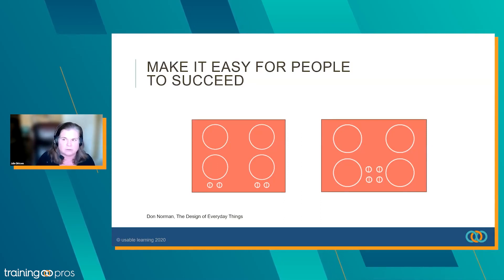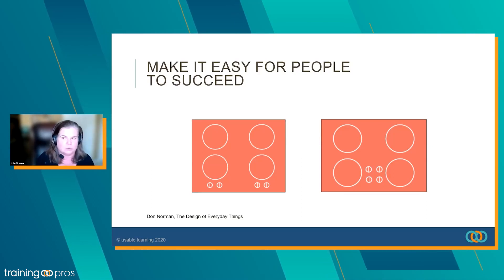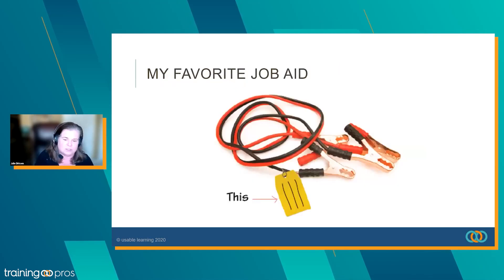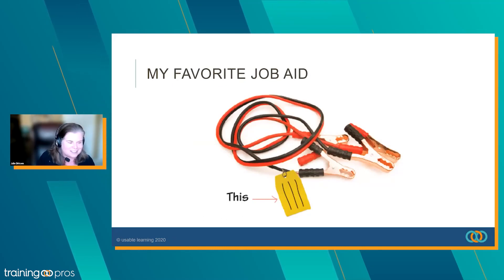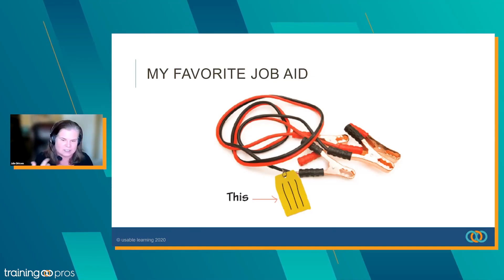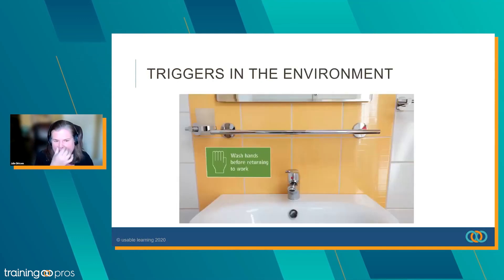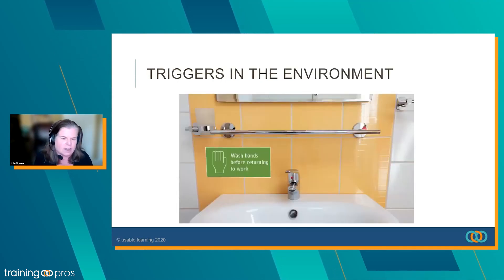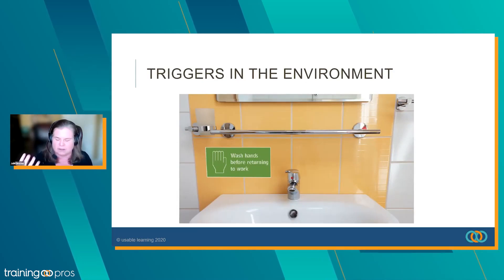I know that falls outside of our responsibilities as learning and development people a lot of the time, but is there anything we can do to make the environment work better to support the behavior? When I was younger and drove bad cars in Minnesota, one of my favorite pieces of information was right on the tag of my jumper cables. It was really helpful because I could never remember which one you plugged to the engine block and so on. Little triggers in the environment can be really important and useful as part of our overall strategy.